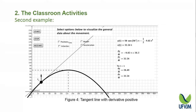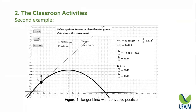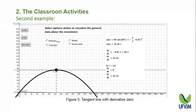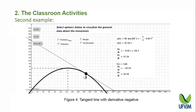This projectile launching model is also very important because it connects the maximum and minimum points concepts with the maximum and minimum height, and also presents the instantaneous velocity concept at each point within the domain of the function. In this picture, we have the tangent line with a positive derivative, the tangent line with a zero derivative, and the tangent line with a negative derivative.